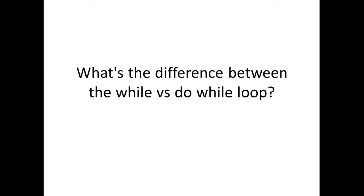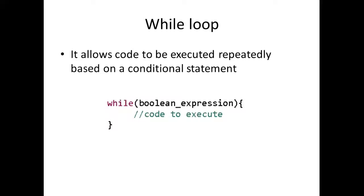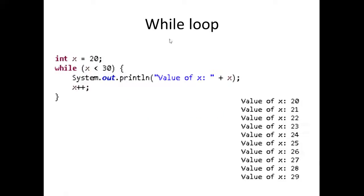Alright, so let's jump right into it. The first thing we're going to be talking about is the while loop. The while loop is a loop that allows code to be executed repeatedly based on a conditional statement. A lot of you guys may already be familiar with the while loop and how it actually works. Generally, the way it works is that we have a while keyword here, and then from there we have a boolean expression, and the code inside this while loop is going to be executed as long as this boolean expression is true.